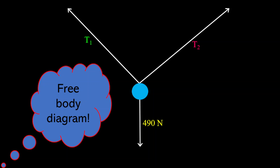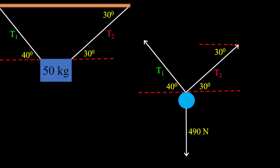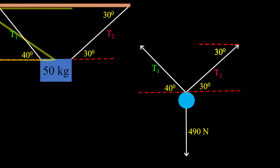Now I want to go back and add some more information to this diagram. The first thing I'm going to do is draw a Z shape right there. That Z tells us that T2 is acting from the ceiling as well as from the mass at the same angle, which is 30 degrees. In a similar way, for T1, the Z shape shows that the opposite angles are equal — so on top we also have 40 degrees. Therefore T1 is acting at 40 degrees from the ceiling as well.